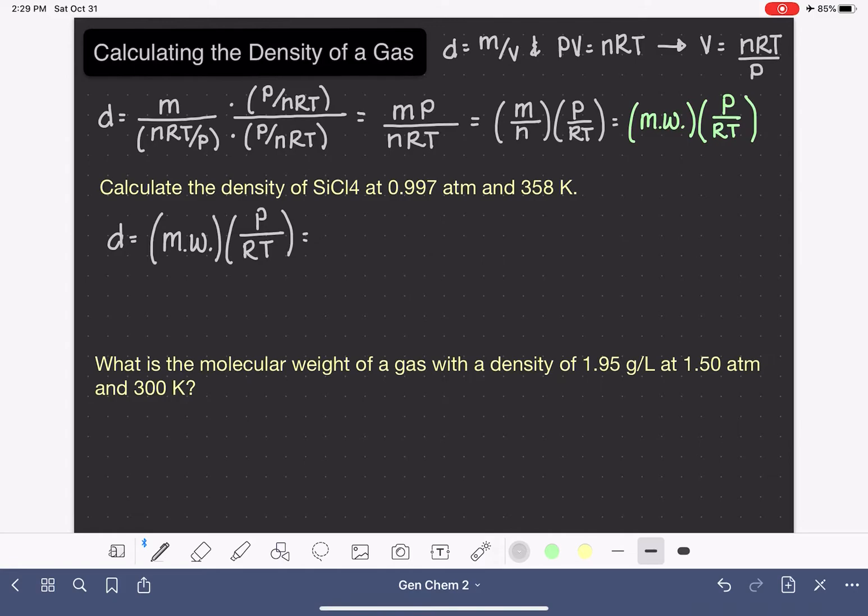So we do need to know the molecular weight of SiCl4. We're going to get that number by going to the periodic table, looking up the average atomic mass for one silicon atom and for four chlorine atoms.